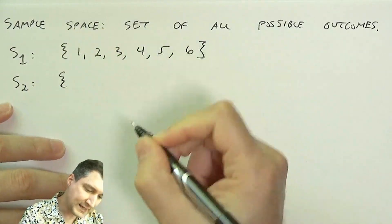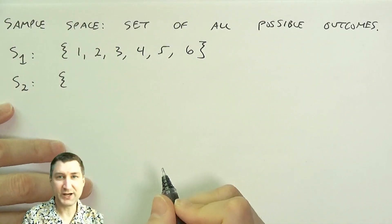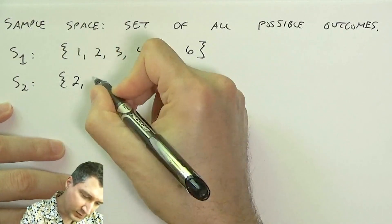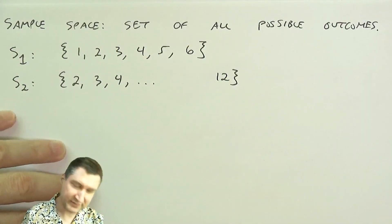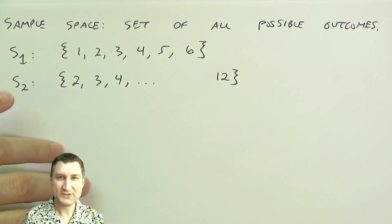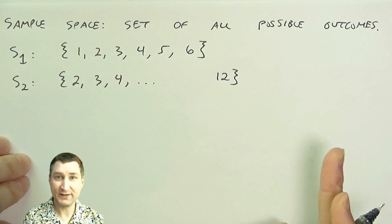When I roll the two dice and I add them up, well, the smallest number I could get is two, right, snake eyes. Or I could get all the way up to 12, boxcars, right? So here I have a sample space that contains 11 outcomes.